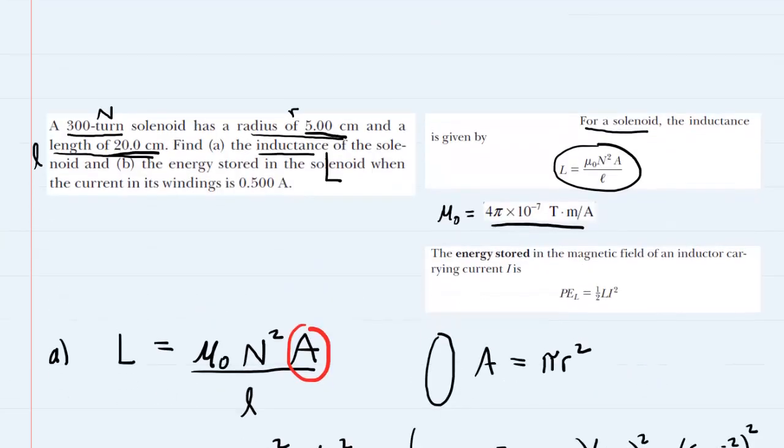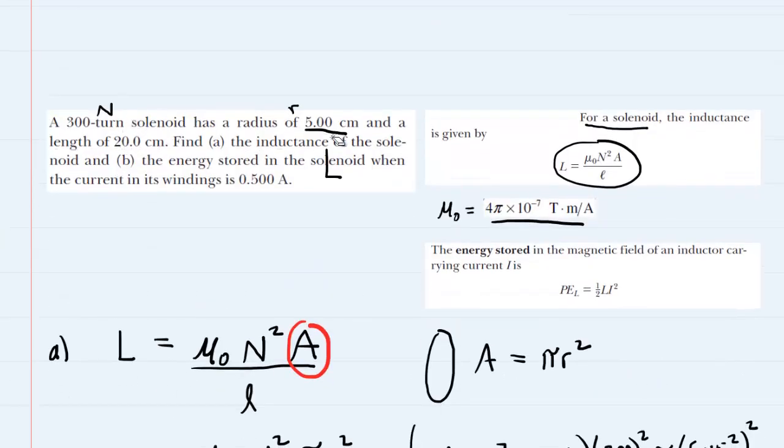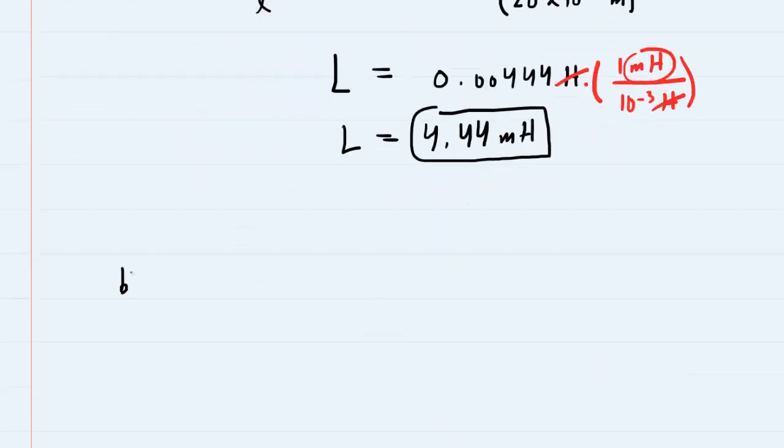In part B, we are asked to determine the energy stored in the solenoid when the current flowing through its windings is half of an amp. Solenoids are devices that store magnetic potential energy, and we know that potential energy stored within the inductor is equal to one-half times the inductance times the current squared. So we're going to use this equation to determine the energy when the current is half of an amp. We'll come down here and rewrite the equation first.